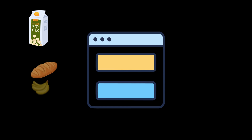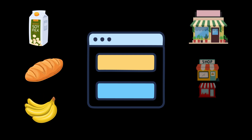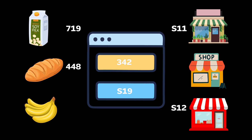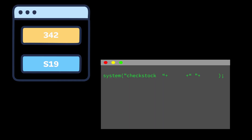Command injection — one wrong input and suddenly your server is executing commands you didn't expect. Imagine you've built a web app that checks the stock of items at your store locations. It's simple: users input the product ID and a store location, your app passes these inputs into a shell command, which calls a back-end service to get the stock data.